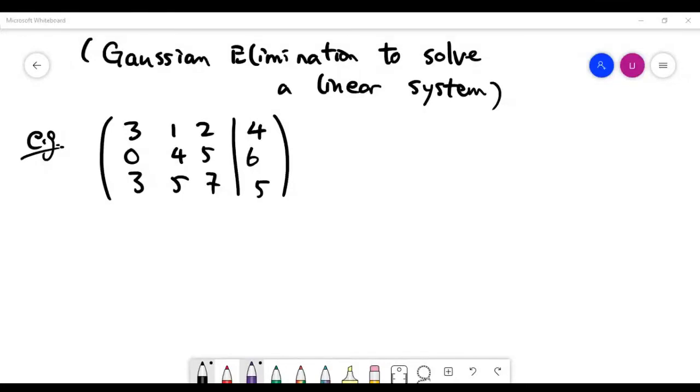In this video, we'll continue our discussion on the method of Gaussian elimination to solve a linear system. I've already written our system in terms of a matrix form, and you can see now there are actually three equations.